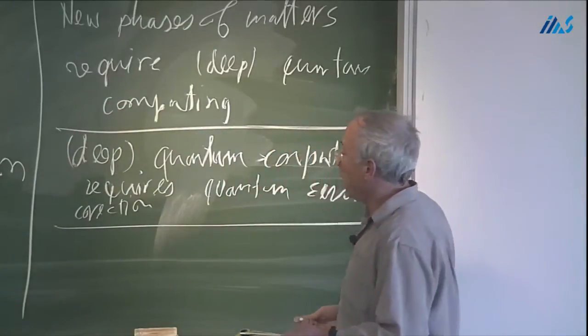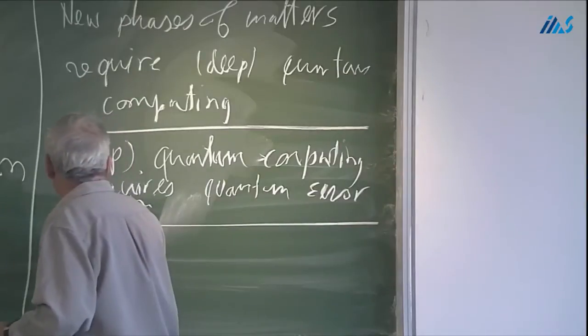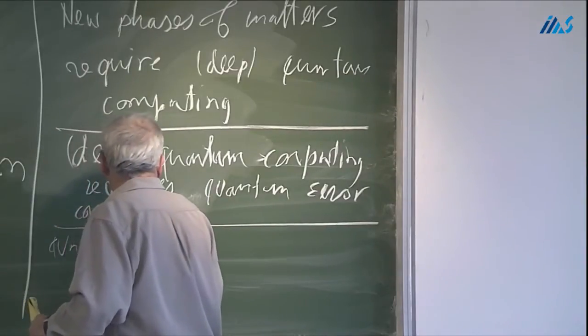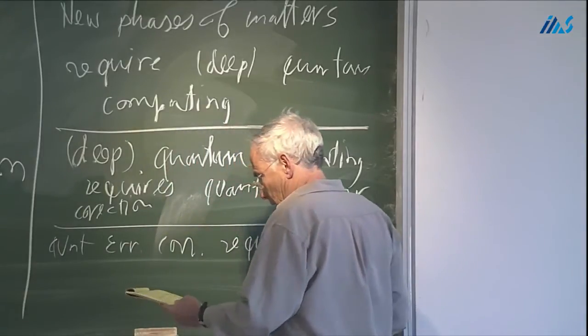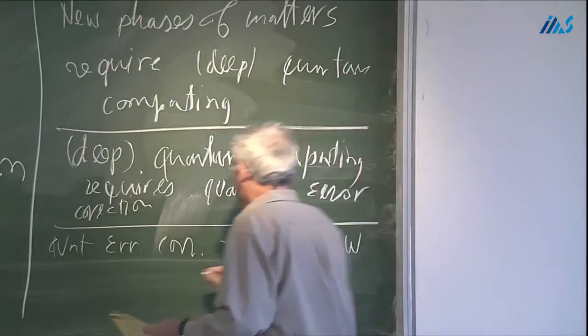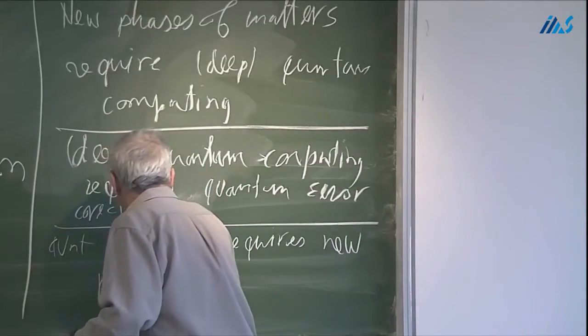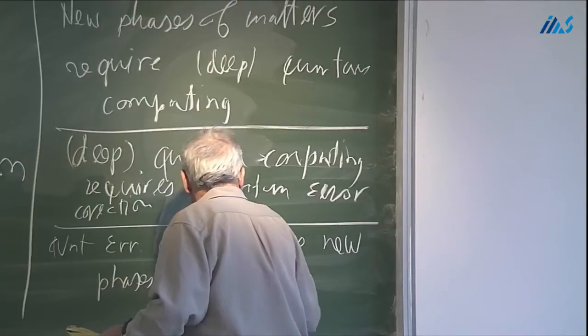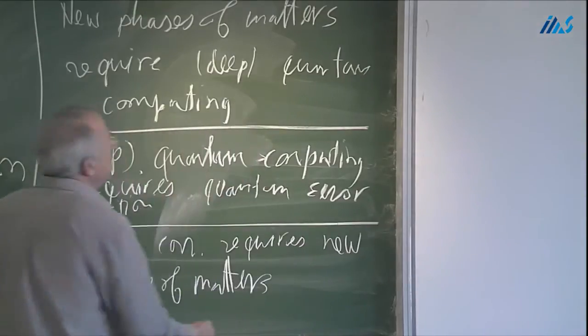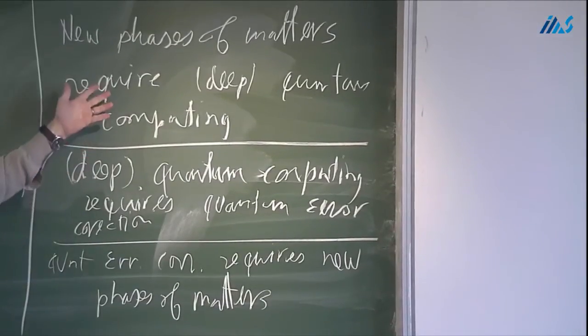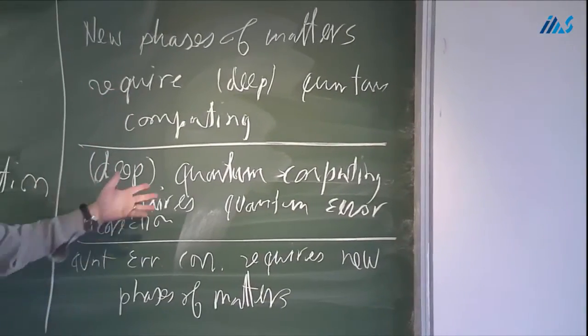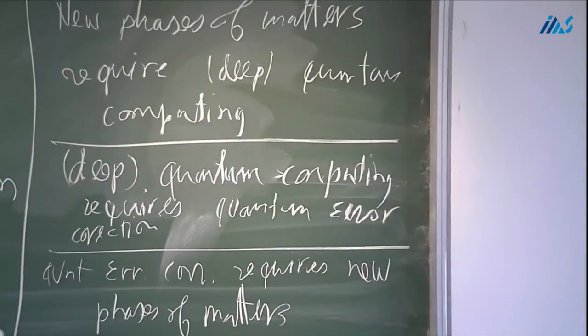And the third insight is that quantum error correction requires new phases of matter. And this suggests that, at least when we talk about the Hilbert space of physics, what you see here is that you have a sort of a vicious circle. In order to achieve new phases of matter in this huge Hilbert space, you require quantum computing. To achieve quantum computing requires error correction, and to achieve error correction, you require new phases of matter.